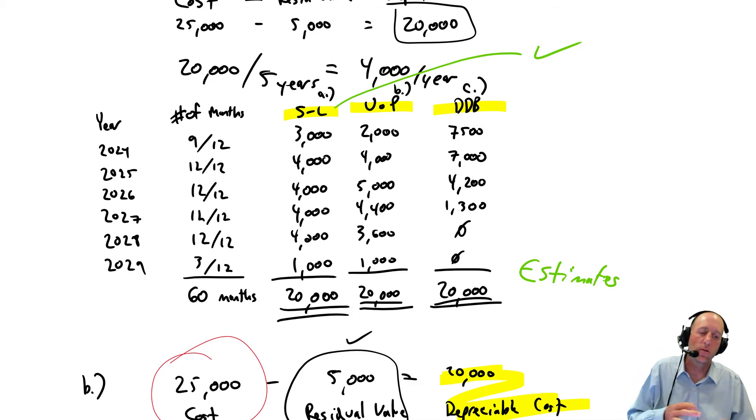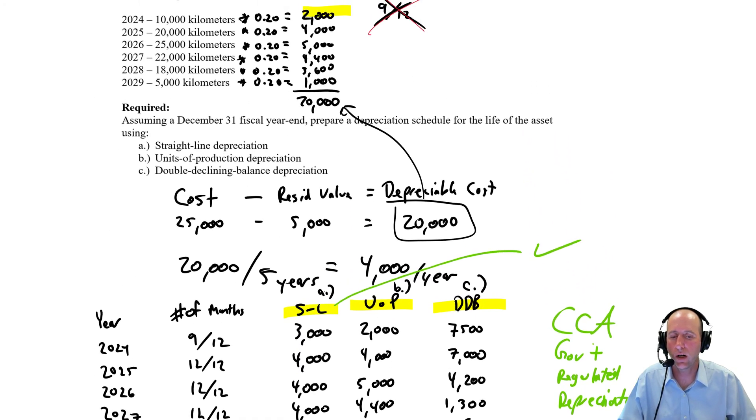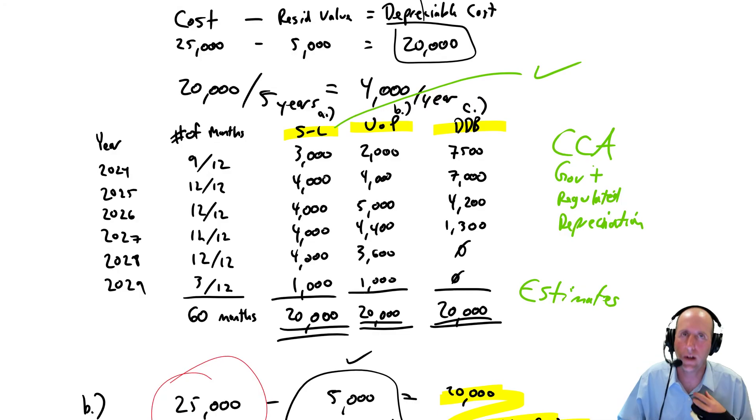The units of production, it's an estimate. These are all estimates. The units of production might be a marginally better estimate, but even that is debatable. And so as I've become a more pragmatic accountant, I think straight line's probably the way I'd go for just about all of my assets. And it's the most commonly used. Double declining balance is second most common. And the reason companies in Canada use double declining balance is because the government for taxes mandates a form of declining balance. If you look up something called CCA in Canada, it is the government-regulated depreciation.